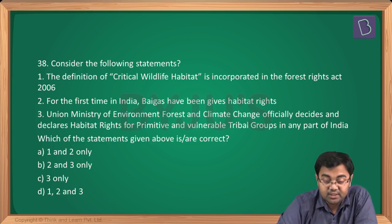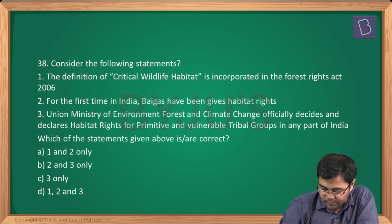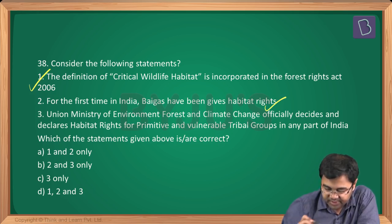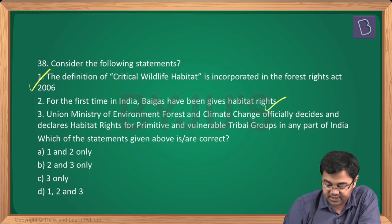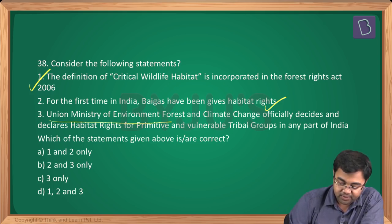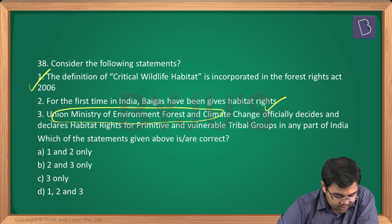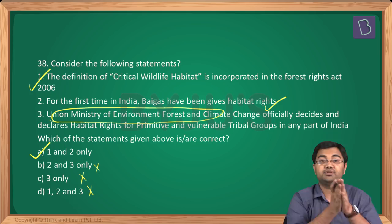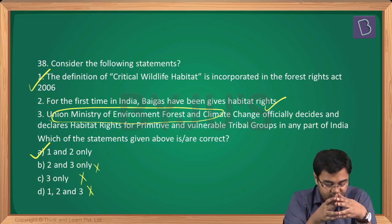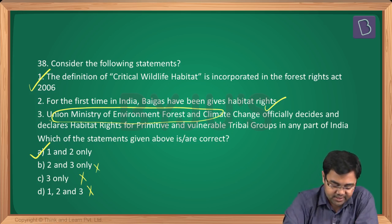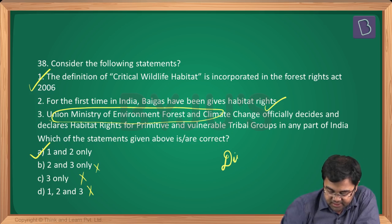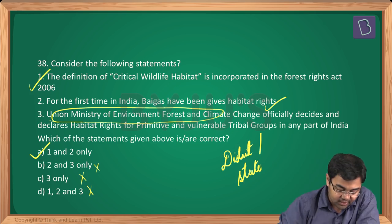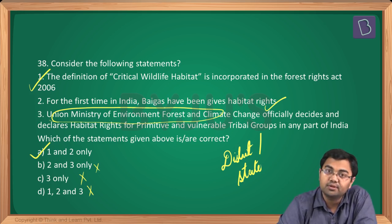Question number 38: the definition of critical wildlife habitat is incorporated in the Forest Rights Act 2006 — correct. For the first time in India, Baigas have been given habitat rights — also correct. Statement 3 says the Union Ministry of Environment, Forest and Climate Change officially decides habitat rights for primitive and vulnerable tribal groups — wrong. This is actually done at the district or state level by state forest boards. So we are left with statements 1 and 2, giving option A.